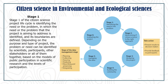The first stage of the citizen science project life cycle is identifying the need or problem. The need or problem that the project aims to address is identified and boundaries are defined. Depending on the purpose and type of project, the problem or need can be identified by scientists, participants, other stakeholders, or all of them together, based on models of public participation in scientific research and levels of participation. At this stage, it is useful to think about key stakeholders and understand the problem from their perspective.